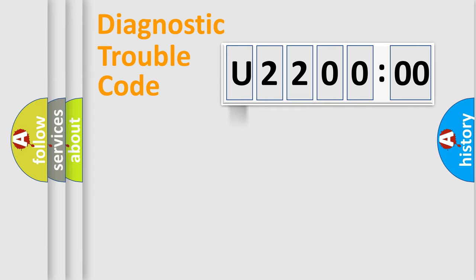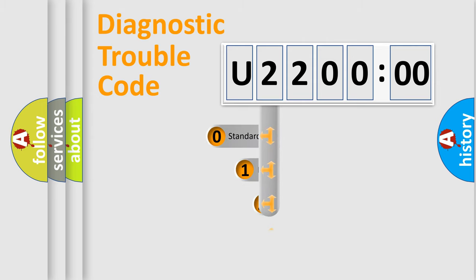Powertrain, Body, Chassis, Network. This distribution is defined in the first character code.